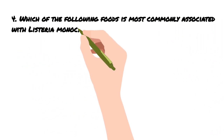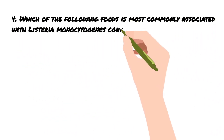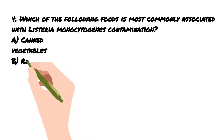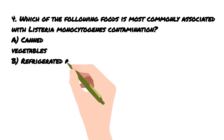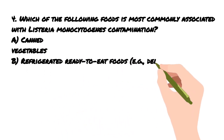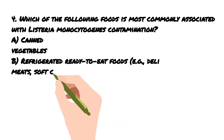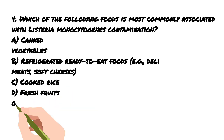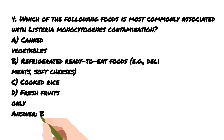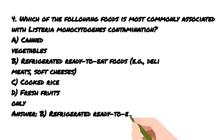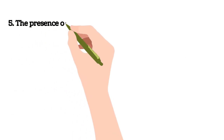Fourth question: which of the following foods is most commonly associated with Listeria monocytogenes contamination? A) Canned vegetables, B) Refrigerated ready-to-eat foods such as deli meats, C) Cooked rice, D) Fresh fruits. Answer is B) Refrigerated ready-to-eat foods.